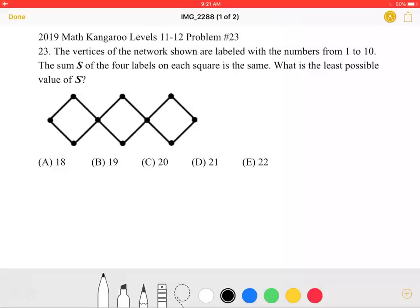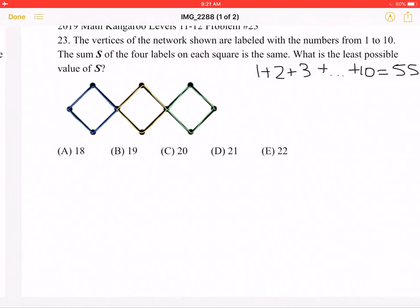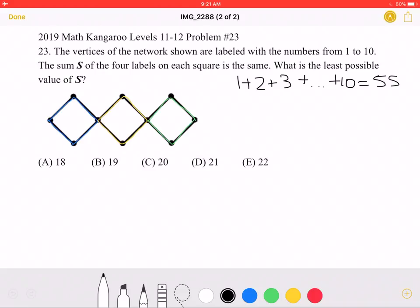This is the problem as originally appeared on the test. And here is where we will be doing the solution. As the problem states, the sum s of the four labels on each square is the same.